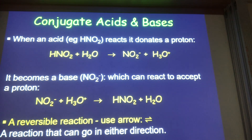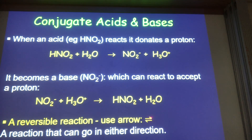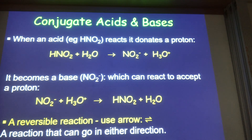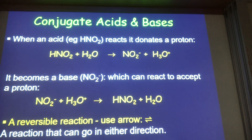Because it's a reaction that can go both ways, we say it is a reversible reaction. Instead of writing the reaction twice, we use the reversible arrow. That equation is written that way to indicate the reaction can go forward or backward depending on the circumstance.